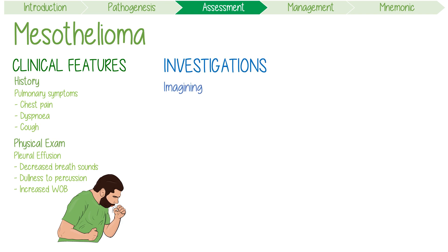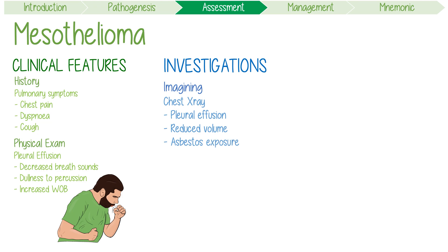Now let's focus on some vital investigations. Imaging should always be considered, with a chest X-ray typically being the initial exam. Possible findings include unilateral pleural effusion, reduced lung volumes, or parenchymal changes evidencing asbestos exposure.